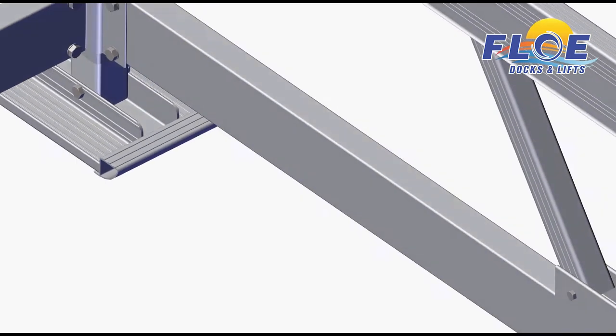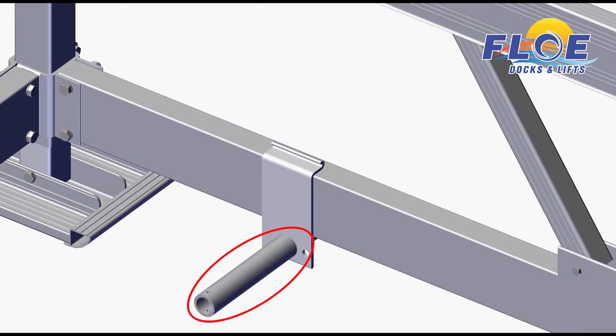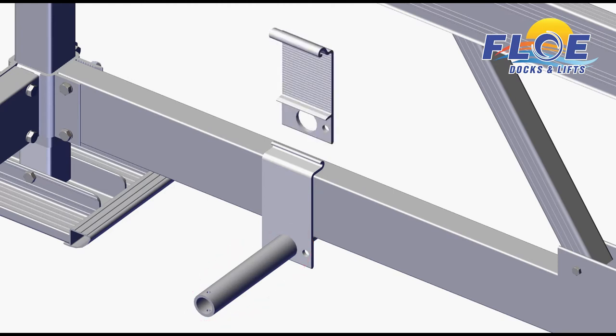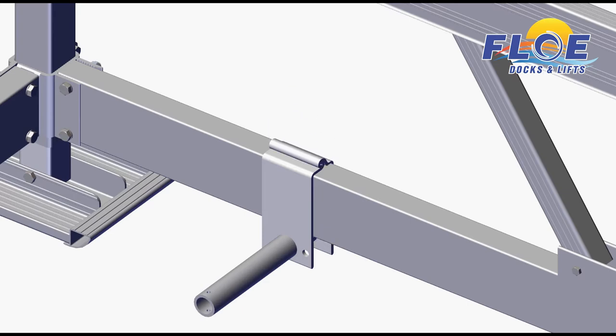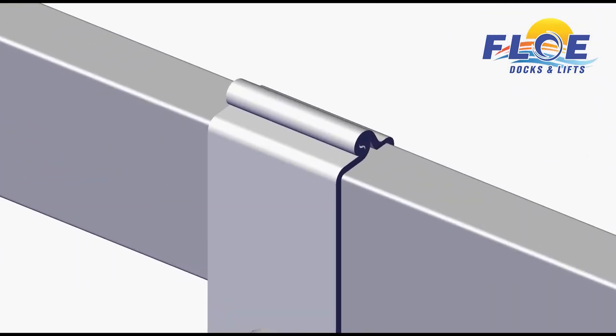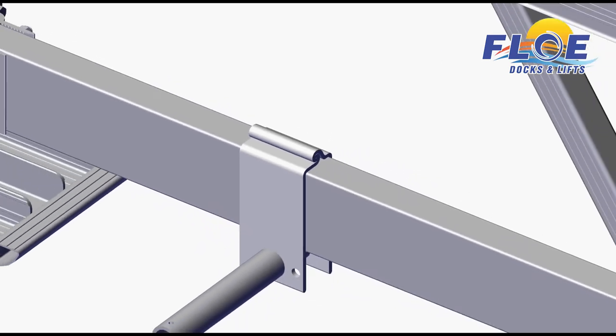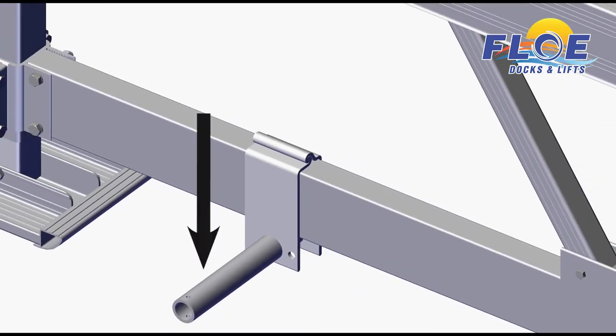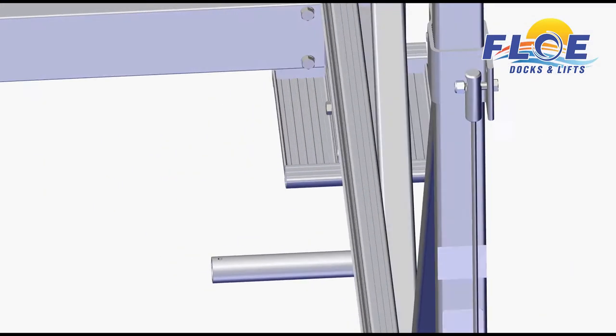Place the half of the clamp assembly that contains the spindle onto the frame beam with the spindle facing inward as shown. Put the other half of the clamp without the spindle onto the clamp with the spindle. The two halves are engineered to fit together. It may be necessary to push down on the spindle to get it into the other half of the clamp.